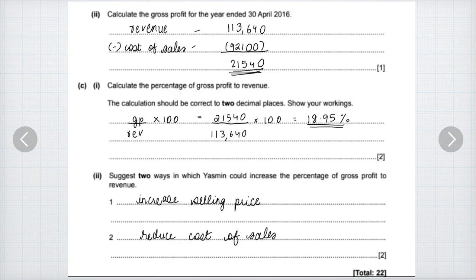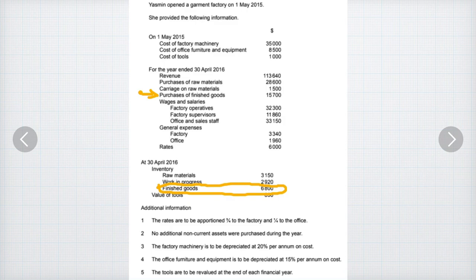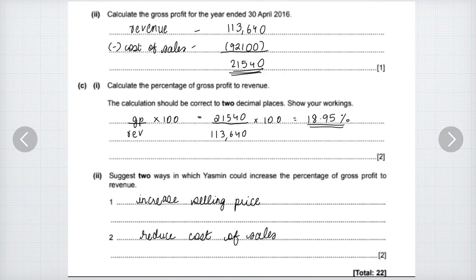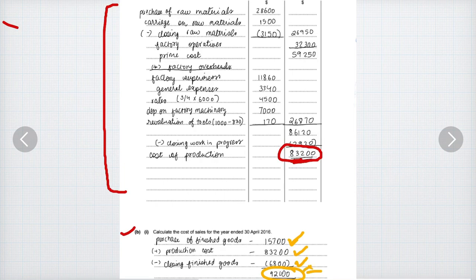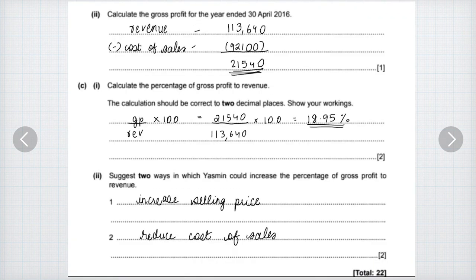Then they tell us to calculate the gross profit for the year. Gross profit is calculated by revenue minus cost of sales. The revenue in this question is $113,640. So we do $113,640 minus the cost of sales of $92,100, and we get $21,540.